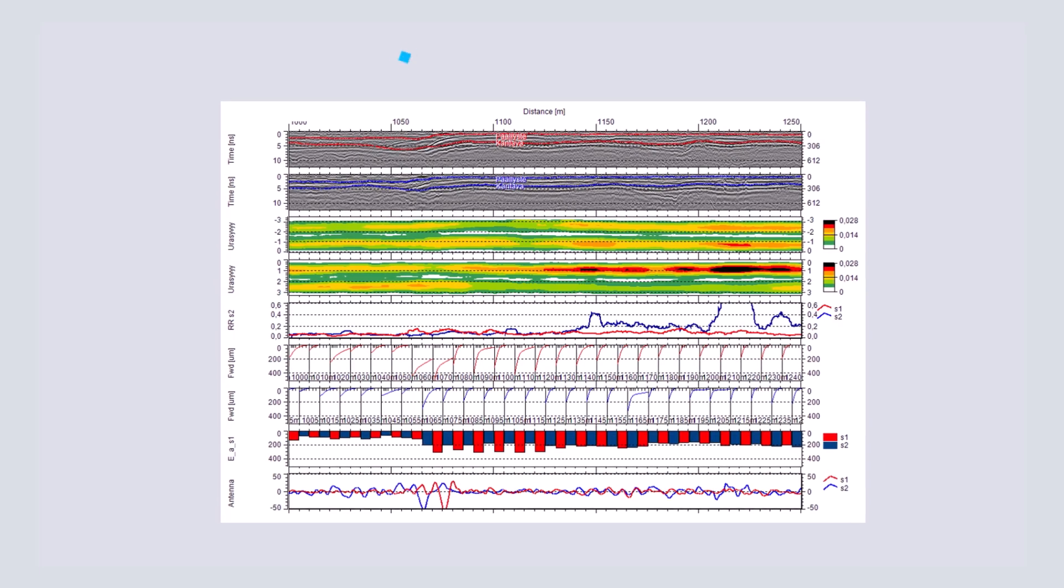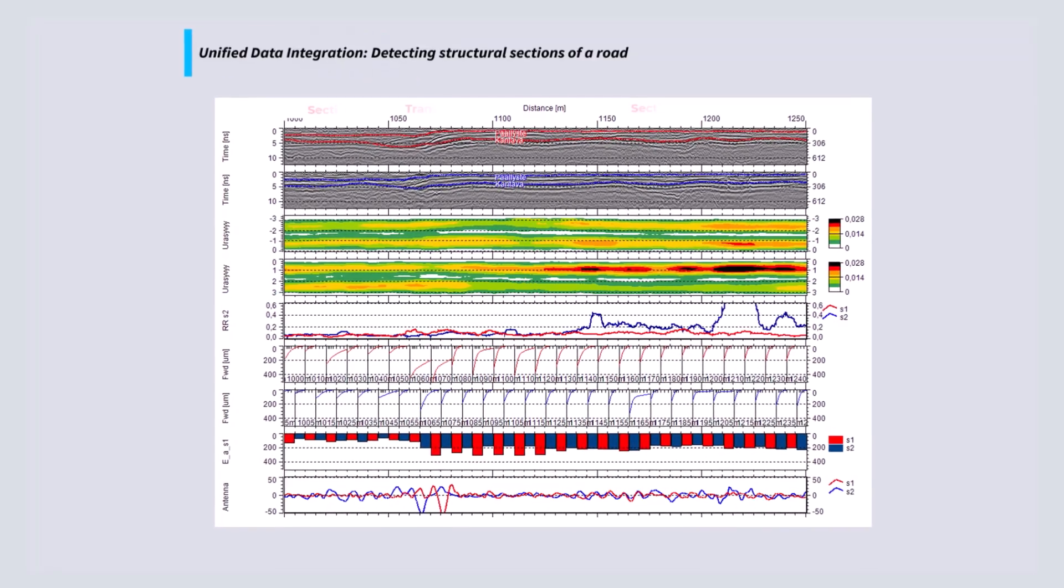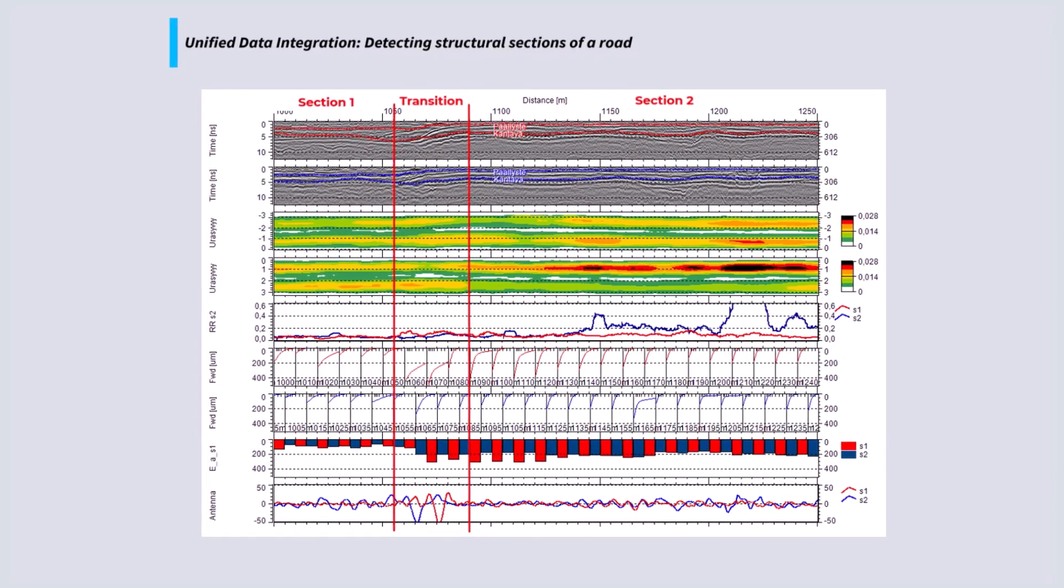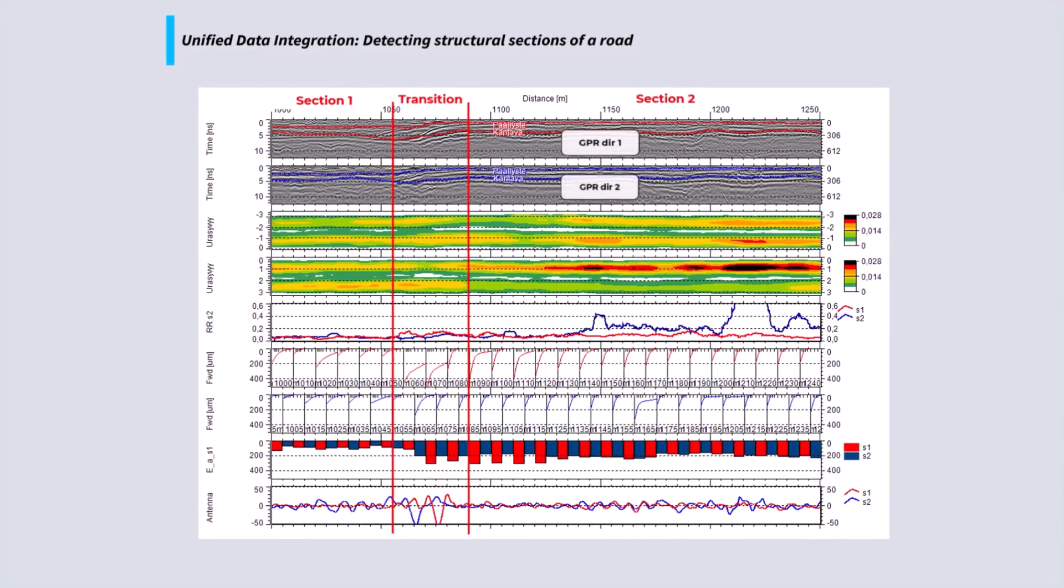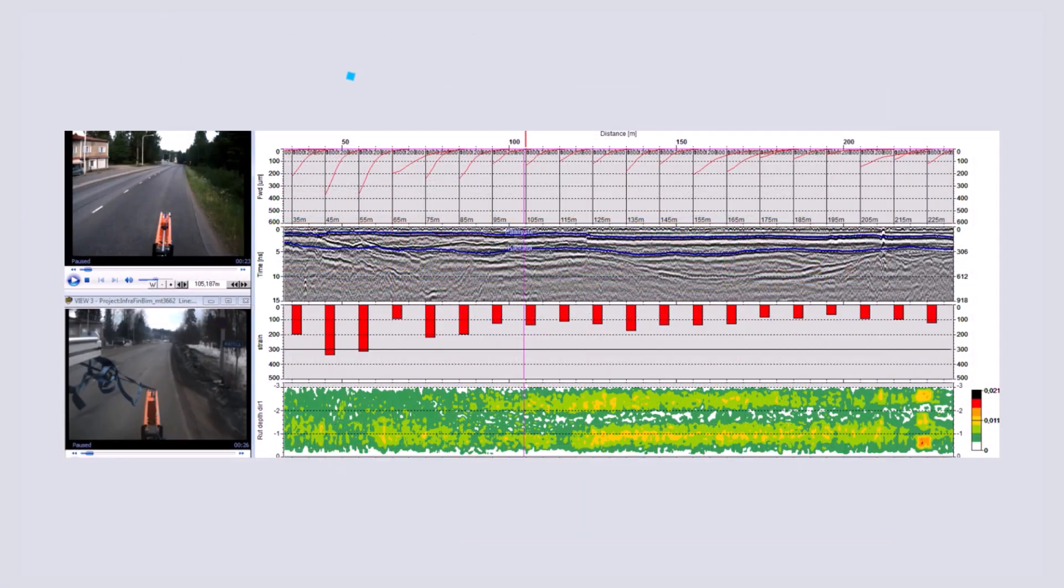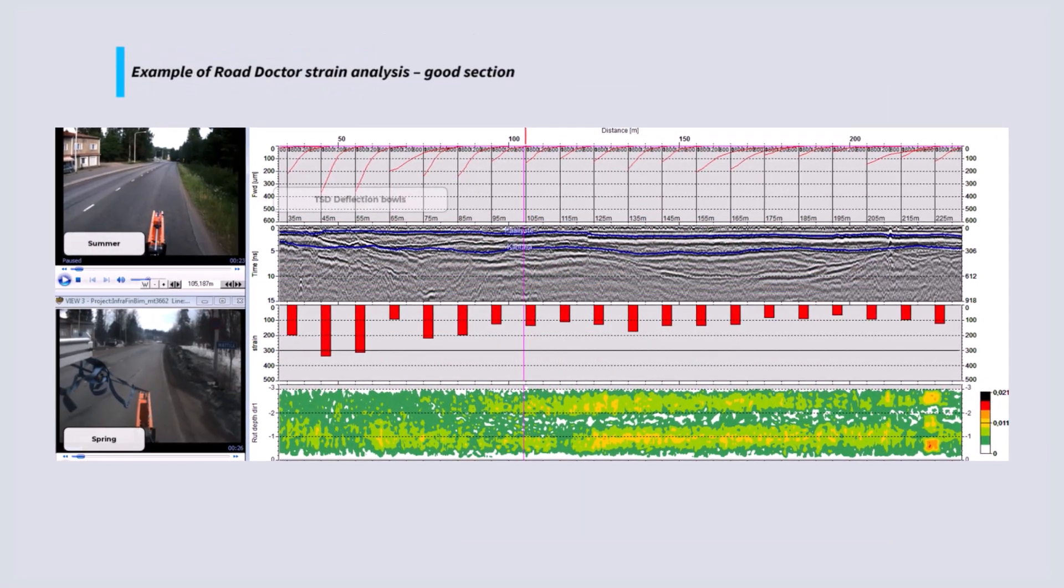With both datasets available in one platform, engineers can correlate deflection measurements with subsurface conditions. This helps in identifying the root causes of observed pavement deflections and understanding how subsurface issues impact surface performance. This ability makes it easier to identify specific problems and determine the most appropriate maintenance and rehabilitation strategies.